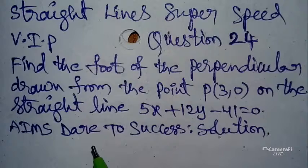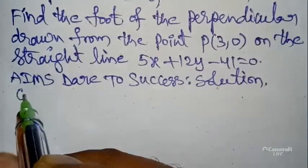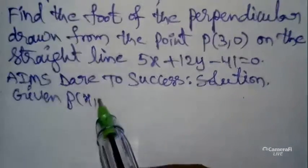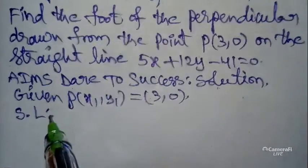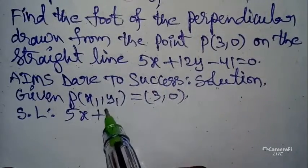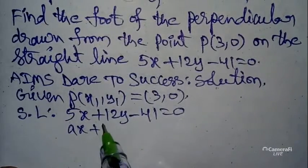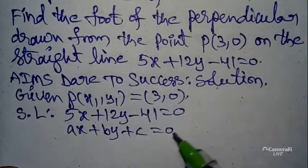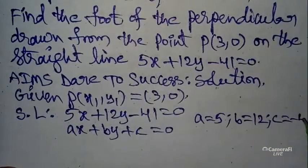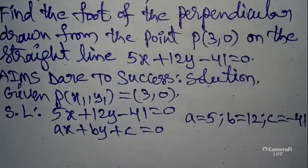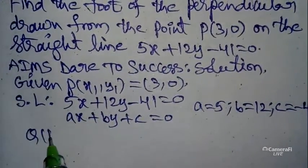Now I want to start the solution. To find the foot of the perpendicular, first of all we write: given P(x₁, y₁) is (3, 0). Given straight line is 5x + 12y − 41 = 0. This is in the form ax + by + c = 0, where a = 5, b = 12, c = −41.